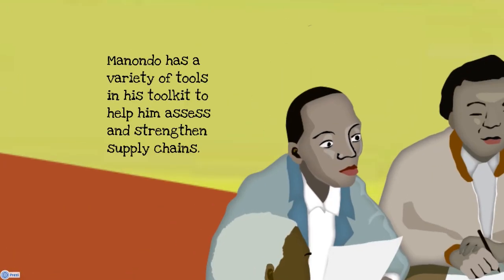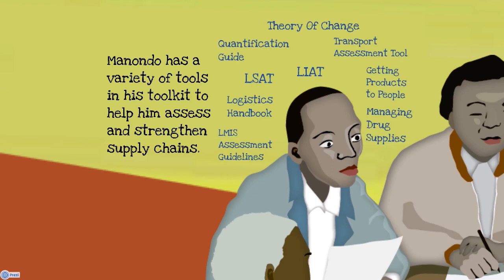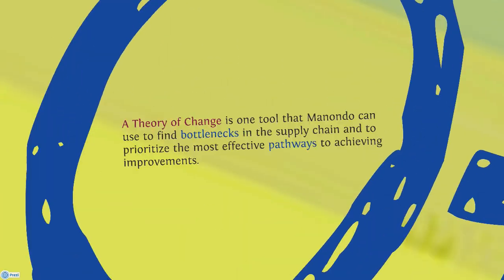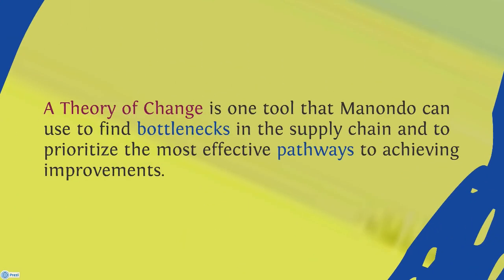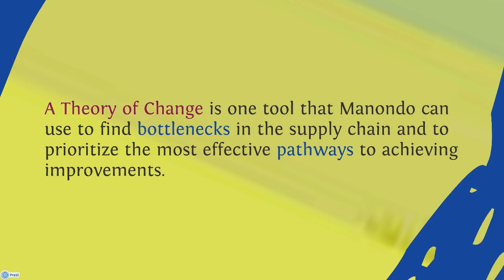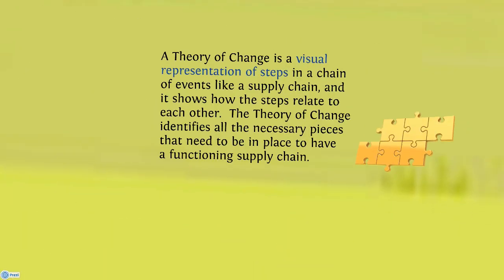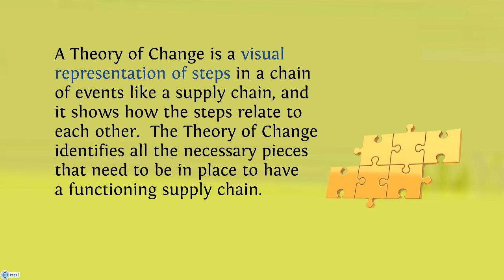Manondo has a variety of tools in his toolkit to help him assess and strengthen supply chains. A theory of change is one tool that Manondo can use to find bottlenecks in the supply chain and to prioritize the most effective pathways to achieving improvements. A theory of change is a visual representation of the steps in a chain of events like a supply chain, and it shows how the steps relate to one another. The theory of change identifies all the necessary pieces that need to be in place to have a functioning supply chain.